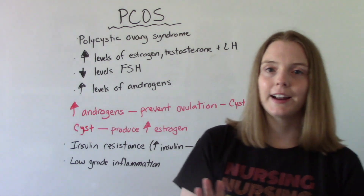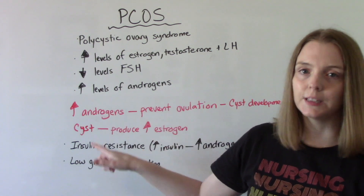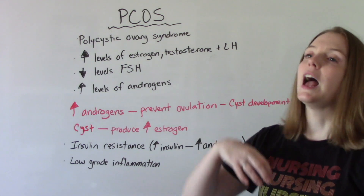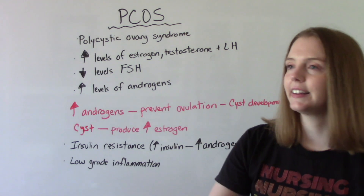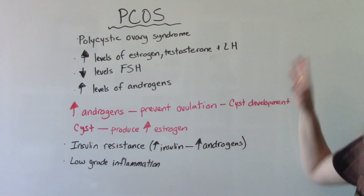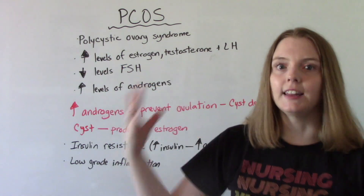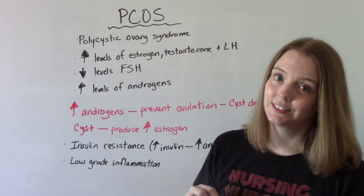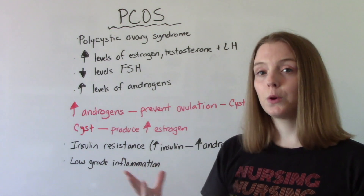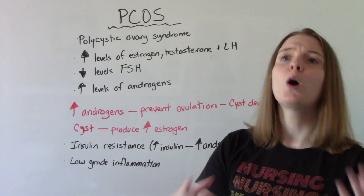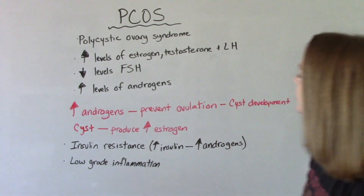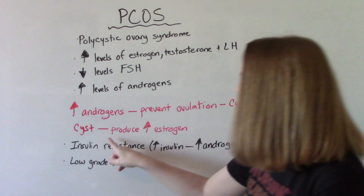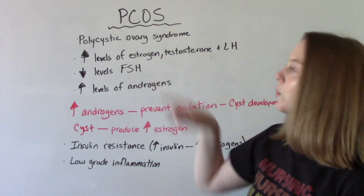Here's a little timeline on how this happens. Increased androgens in the body prevent ovulation or cause irregular ovulation. When you have irregular ovulation, that can lead to the development of cysts — so that's the name. Poly meaning a lot, cystic meaning cyst, so we have a lot of cysts in the ovaries. Not everybody who has PCOS has cysts, but most people do. Those cysts then produce more estrogen, leading to higher levels of estrogen.